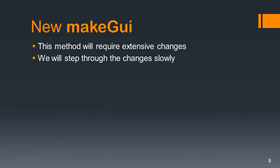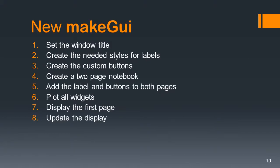Our new make_GUI is probably where we're going to have the most extensive changes, so let's go through it slowly. We have to set the window title as before, create the needed styles for labels — we're going to have two new styles — create the custom buttons (that hasn't changed), create a two-page notebook, add the label and buttons to both pages, plot all the widgets, display the first page, and then update the display.